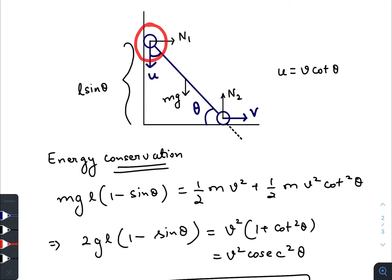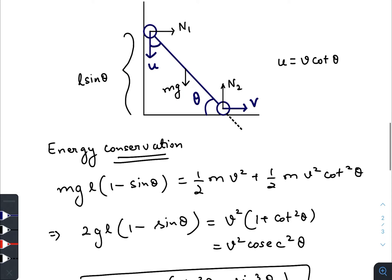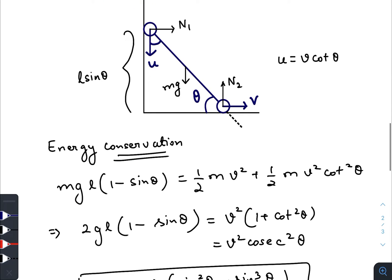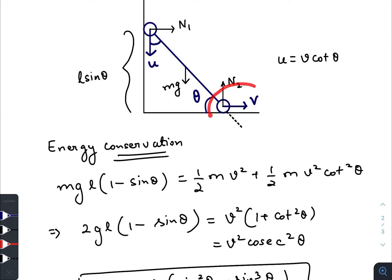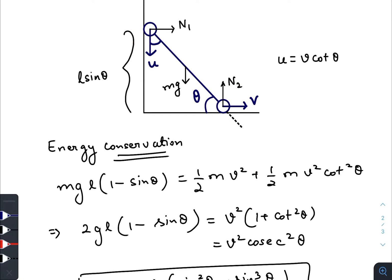Since there is no friction, the decrease in potential energy of the system is only due to the upper mass, as the lower mass does not change its vertical height. Initially the structure was vertical. The decrease in potential energy of the upper mass is mgl - mgl·sinθ. This gives rise to increase in kinetic energy: ½mv² for the lower ball and ½mu² for the upper ball, where u = v·cotθ.